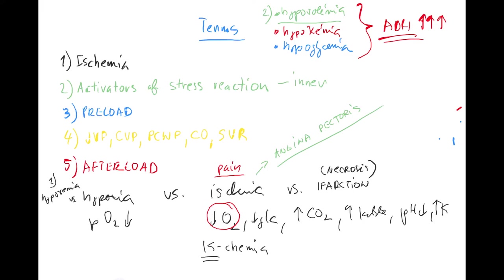Preload has a complicated mathematical definition, but simplified: preload is increased when there is lots of blood coming into or staying in the heart, and decreased when there is less blood coming into the ventricles. It depends on which side of the heart you're referring to — right or left — but basically, less blood entering the ventricles means decreased preload.